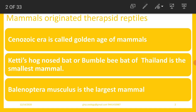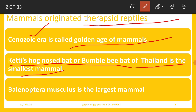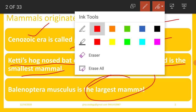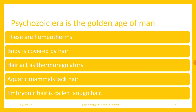Mammals originated from therapsid reptiles. Cenozoic era is called the golden age of mammals. Kitti's hog-nosed bat or bumblebee bat of Thailand is the smallest mammal, whereas Balaenoptera musculus is the largest mammal, and Balaenoptera musculus is of course an aquatic mammal.